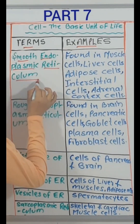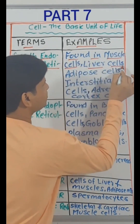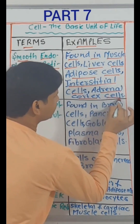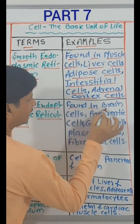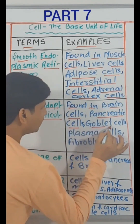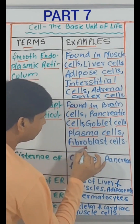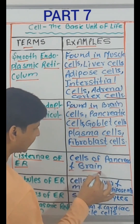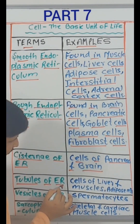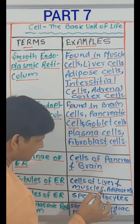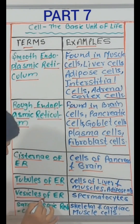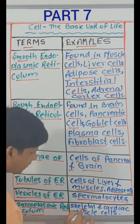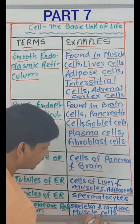Smooth endoplasmic reticulum — found in muscle cells, liver cells, adipose cells, interstitial cells, adrenal cortex cells. Rough endoplasmic reticulum — found in brain cells, pancreatic cells, goblet cells, plasma cells, fibroblast cells. Cisternae of endoplasmic reticulum — cells of pancreas and brain. Tubules of endoplasmic reticulum — cells of liver and muscles, adipose cells. Vesicles of endoplasmic reticulum — spermatocytes. Sarcoplasmic reticulum — skeletal and cardiac muscle cells.